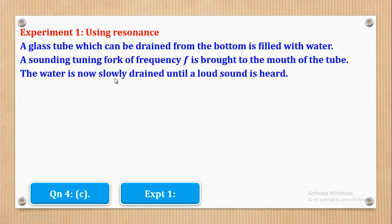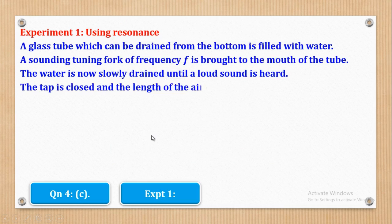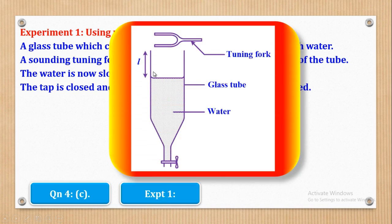Water is now slowly drained until a loud sound is heard. You open the tap slowly so that water starts flowing out, and as it flows out, you listen to the sound of the tuning fork. When the sound is loudest, you close the tap. The tap is closed and the length of the air column L1 is measured — from the top to where the water level is.